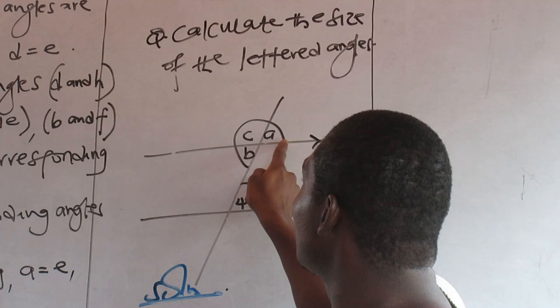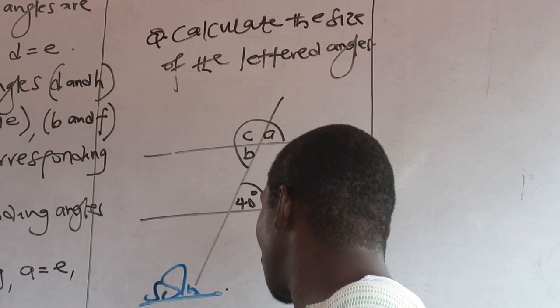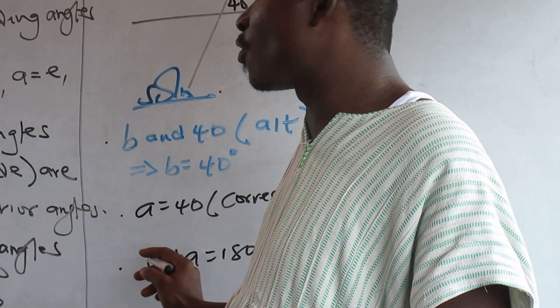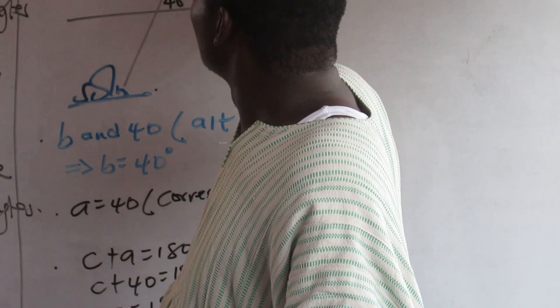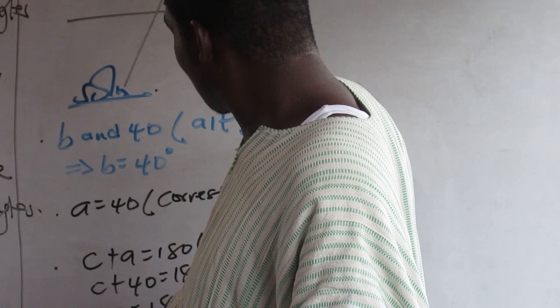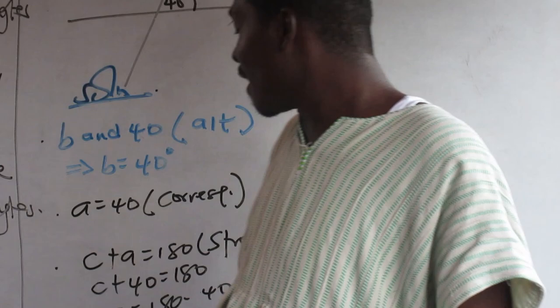I can just say C is straight angle. Straight line angles - are they not? Because 180. C and A are straight line angles, they're equal to 180. So C plus 40 equals 180, C equals 180 minus 40, C equals 140.